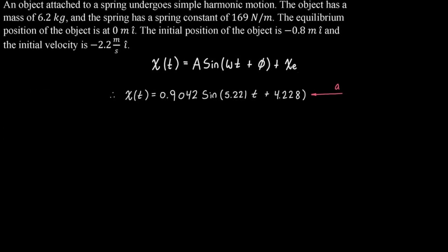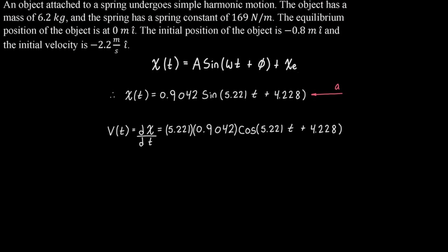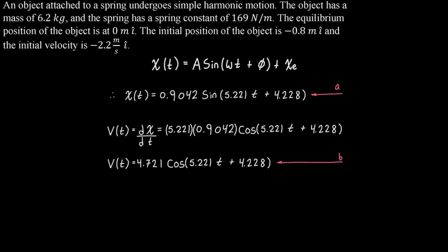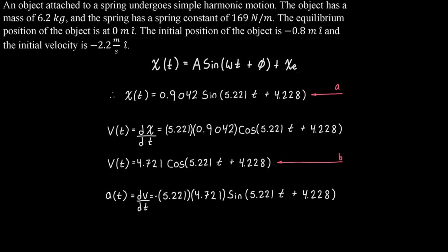Once we have the position equation, the rest is straightforward. We take the derivative of our position with respect to time to get velocity: the sine turns into cosine and we multiply the amplitude by the angular frequency out front, giving v = 4.721 cos(5.221t + 4.228). For acceleration, we take the derivative of velocity: cosine turns into negative sine, and we multiply by the angular frequency again, giving a = −24.64 sine(5.221t + 4.228).